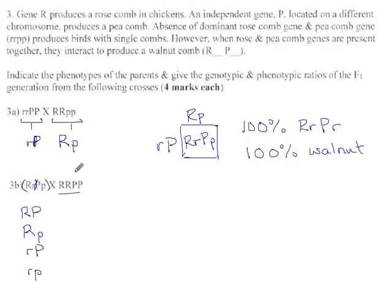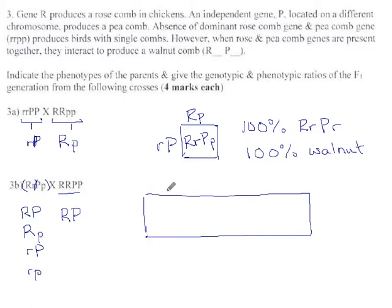And this parent is very simple, only one type of gamete. All they can pass on is a capital R, and all they can pass on is a capital P. So we're going to have a four by one Punnett chart here. I'll put it horizontal so I have a little room to write.